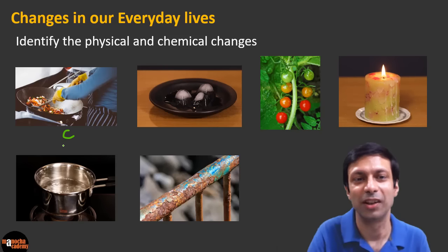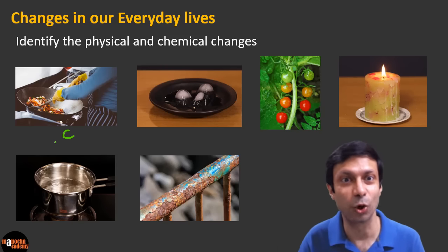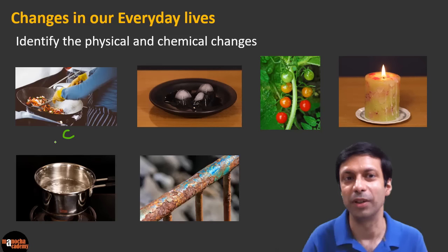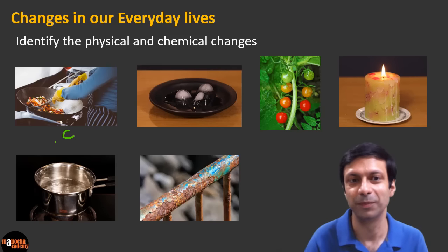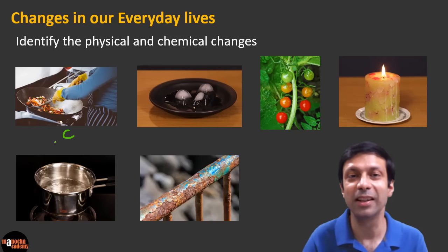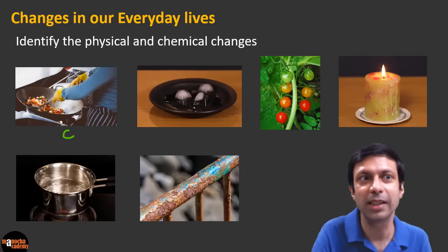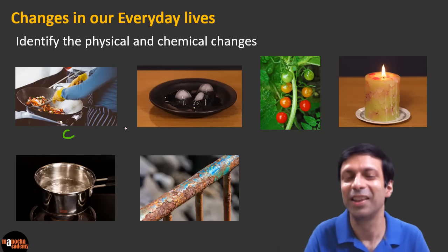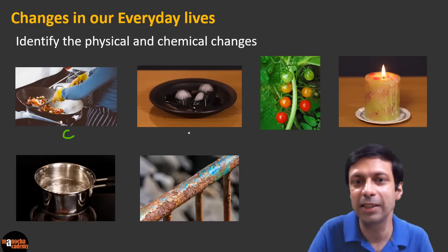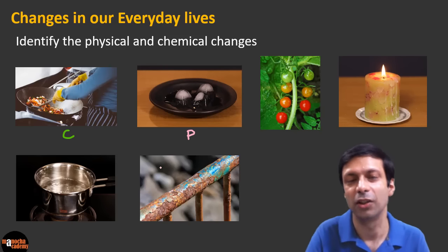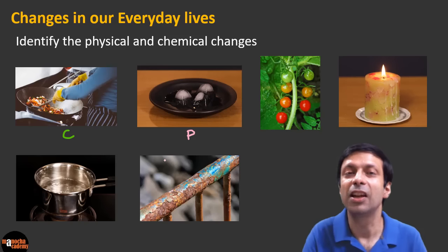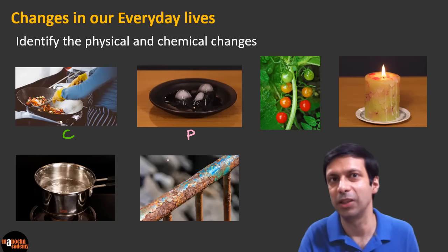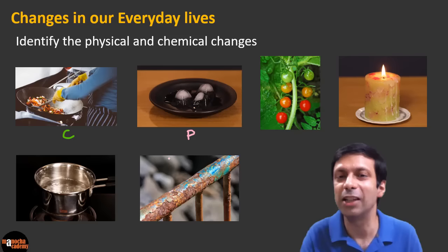It's a chemical change, because once the food is cooked, new substances are formed and it's irreversible. Now let's take a look at the next picture, where you can see that the ice is melting. So what change is that? Melting of ice is a physical change. I'll label it with P because it's reversible and no new substance is formed — ice just melts to water.